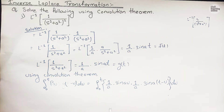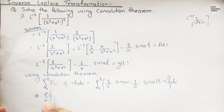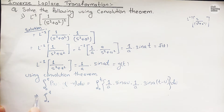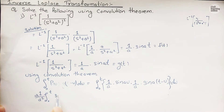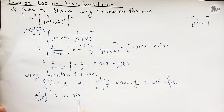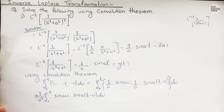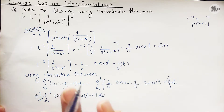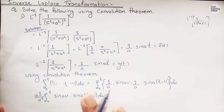We can rewrite this as the integral from 0 to t of (1/a²)·sin(au)·sin(a(t−u)) du, taking the 1/a² constant outside. Now, as I mentioned in the previous lecture, we cannot solve directly when the trigonometric functions are in product form, so we have to apply the formula: 2·sin(au)·sin(a(t−u)).